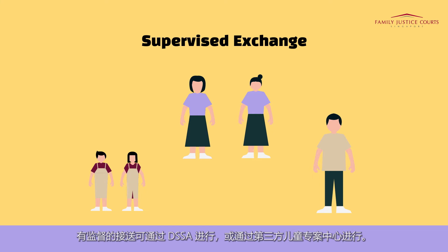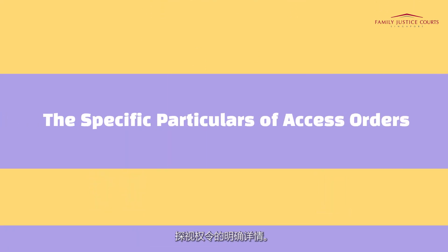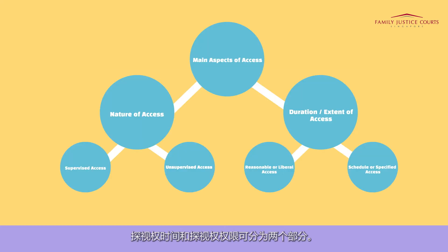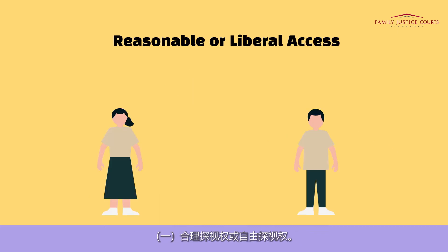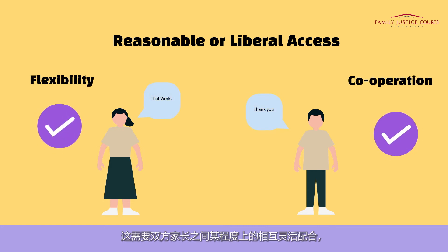Supervised exchanges can also be done via a DSSA or a third party child specialist facility. The specific particulars of access orders — the duration and extent of access — can be broken down into two categories. The first category is reasonable or liberal access, where both the care parent and the access parent have the liberty to make their own arrangements, together with the child, on when access would take place. This requires a reasonable degree of flexibility and cooperation between both parents.